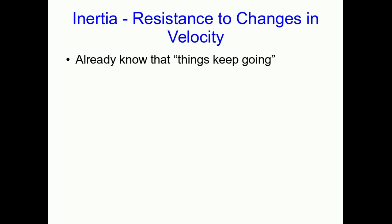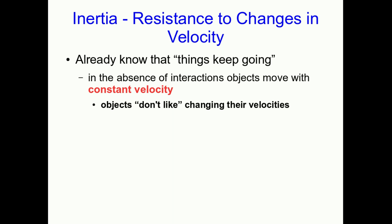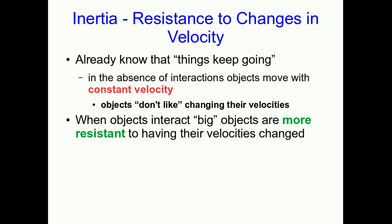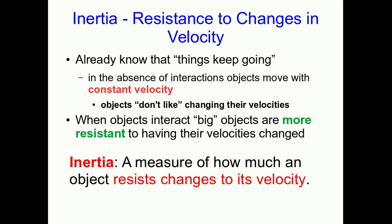We can now propose a fundamental idea, because we already know that things keep going. In other words, in the absence of interactions we've seen that objects move with constant velocity. So if you want to think of it that way, if you want to personify the objects, you could say that objects don't like changing their velocities. Well when objects interact with each other they do change their velocities, but big objects seem to be more resistant to having their velocities changed. I'm putting big in quotes because there are several meanings we could use for big and one of them is correct.